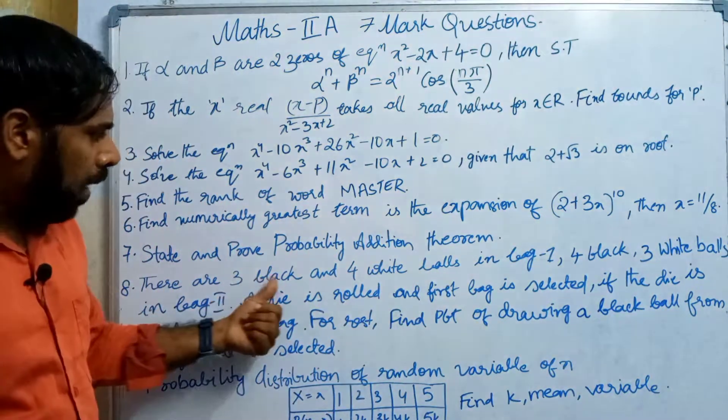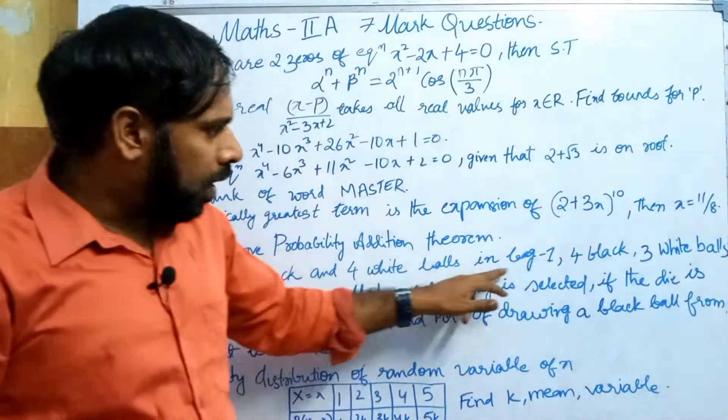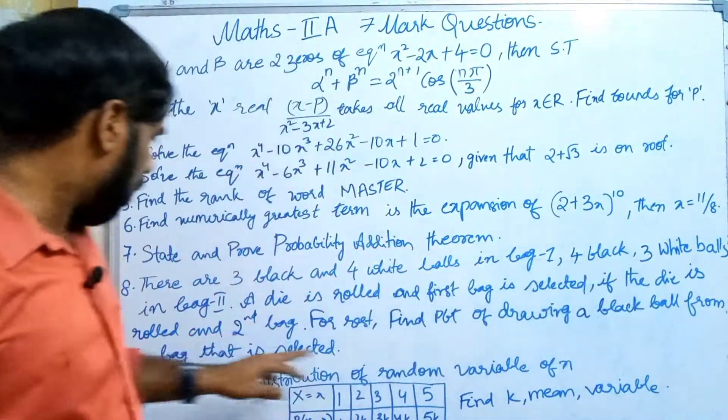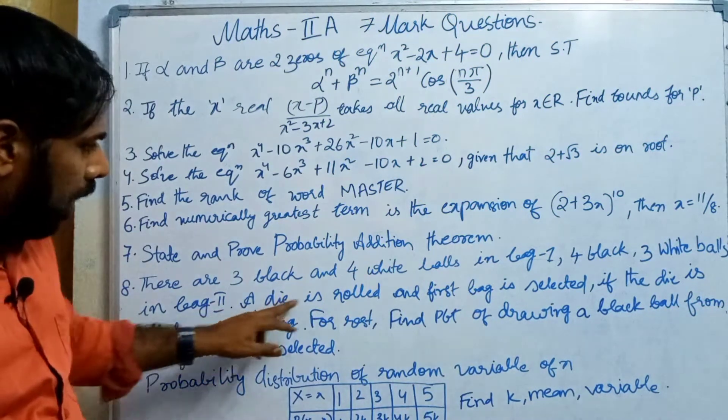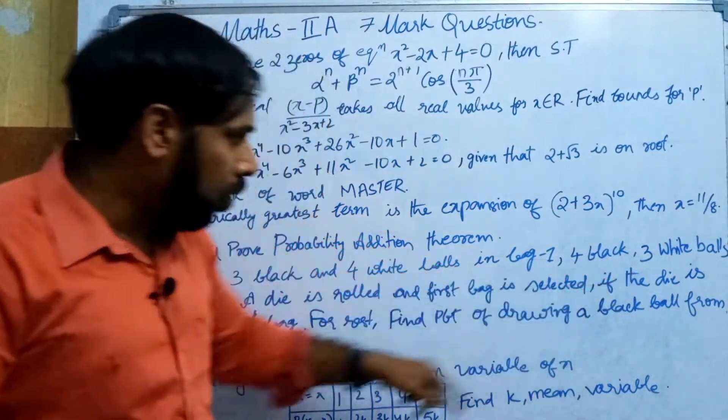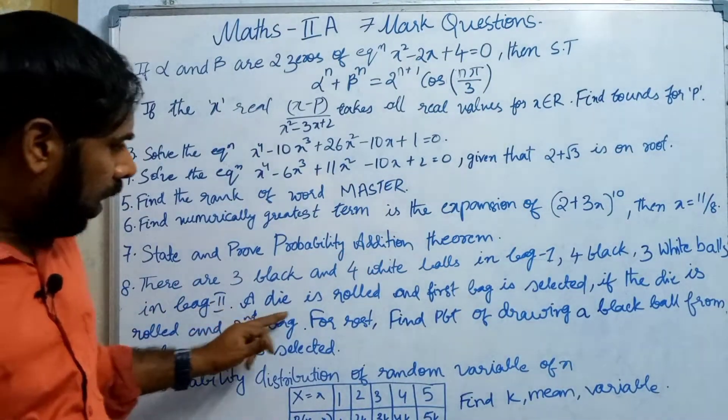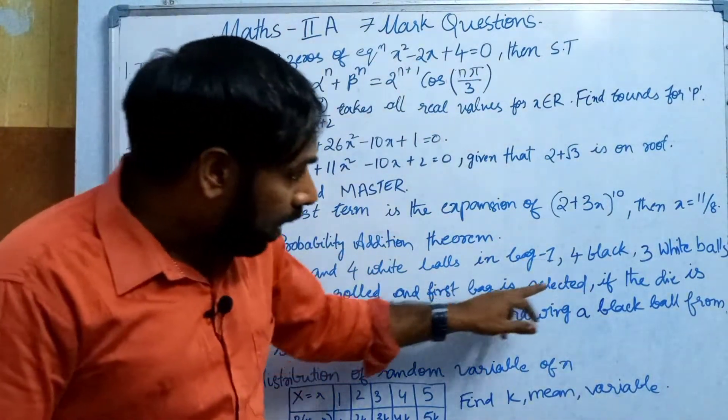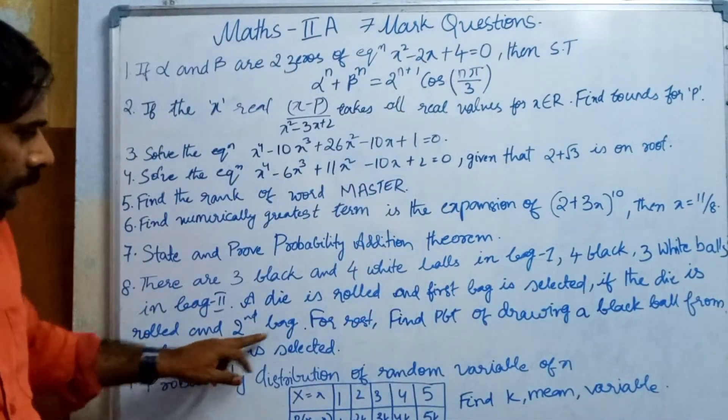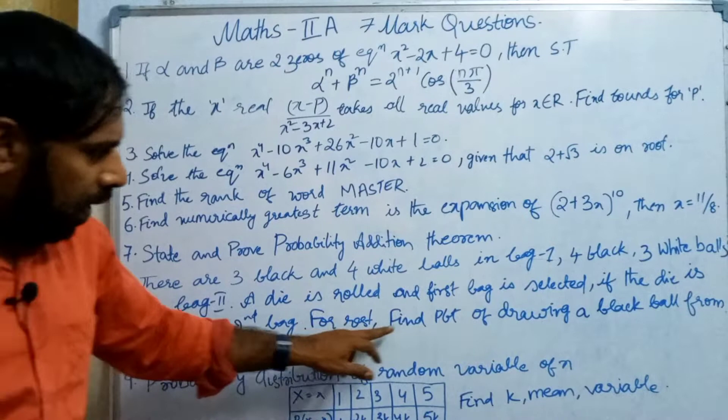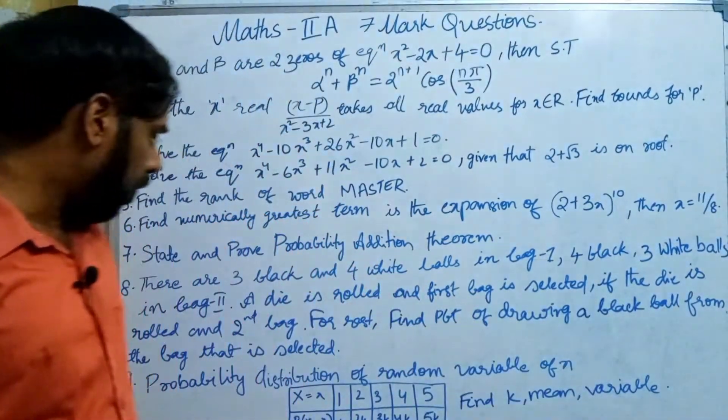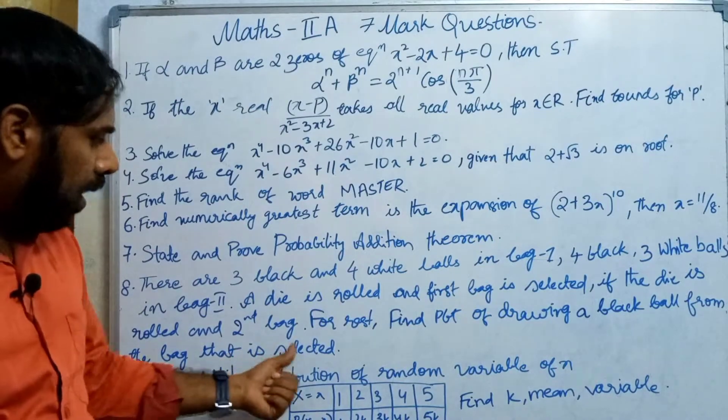There are 3 black and 4 white balls in bag 1, 4 black and 3 white balls in bag 2. A die is rolled and the first bag is selected if the die shows certain numbers. If the die is rolled and the second bag is selected for the rest, find the probability of drawing a black ball from the bag that is selected.